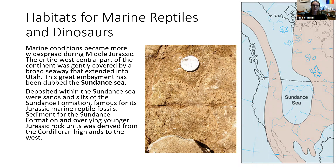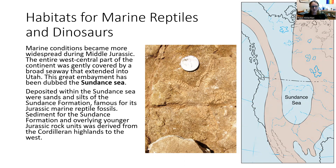This one formed during the middle Jurassic, right in the middle of the Mesozoic Era. During this time, the entire west central part of the continent was totally covered by a seaway that extended all the way down to Utah, coming out of Canada. The deposits of the Sundance Sea were mainly sands and silts, typical of what you would get from a shallow sea, and it's often very common to find marine reptiles here and other marine fossils like the starfish shown here.